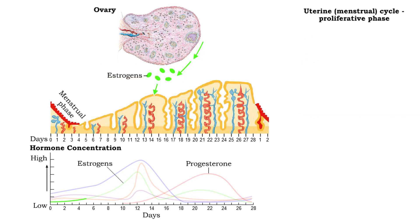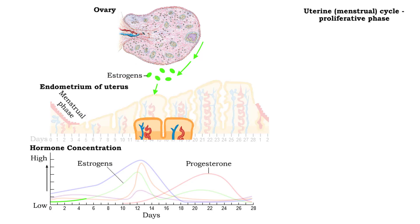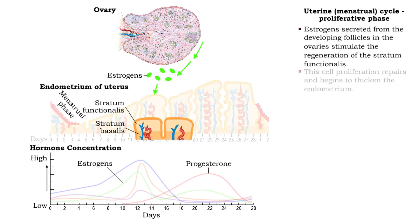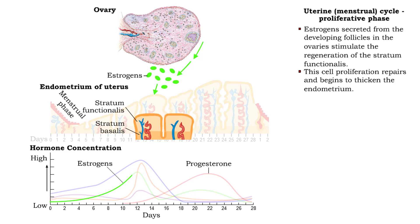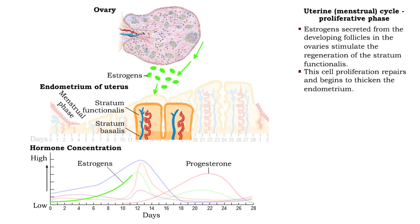After menses, the proliferative phase of the uterine cycle begins. In response to estrogens secreted by the maturing ovarian follicles, the cells of the stratum basalis proliferate, regenerating the stratum functionalis and repairing the endometrium.